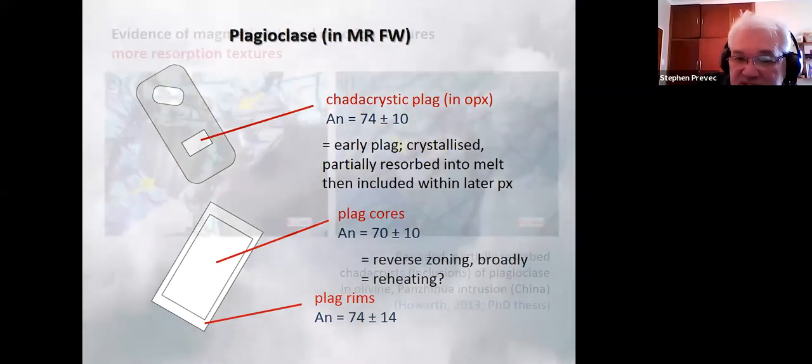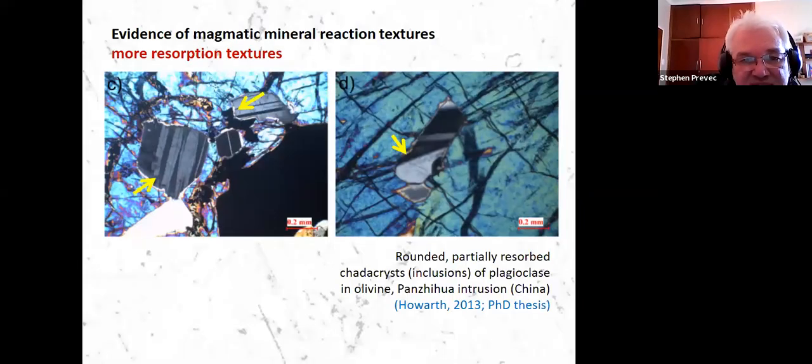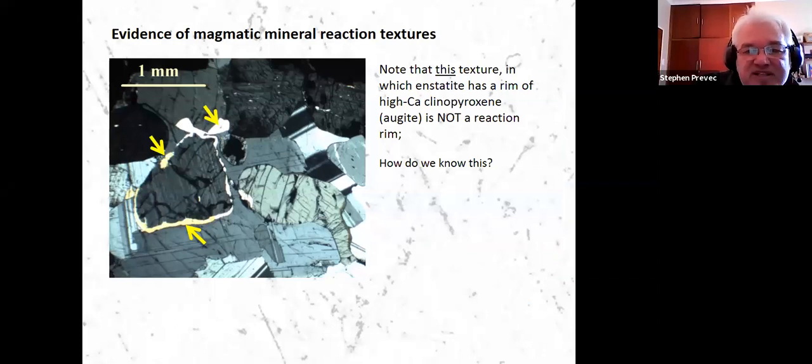Here's some other examples from the Chinese ferrogabbroic layered intrusions where early plagioclase exists as rounded phenocrysts within olivine grains in this case. Here's a couple of textural examples which appear to be disequilibrium, but are in fact probably not. In this example, there's an orthopyroxene grain in Bushveld footwall rocks, Merensky Reef footwall rocks, where there's a clinopyroxene rim around the orthopyroxene where it is in contact with mostly with plagioclase.